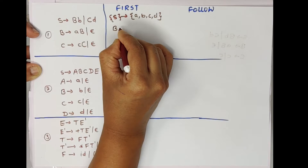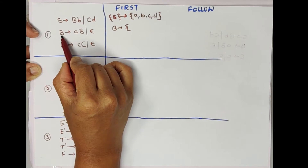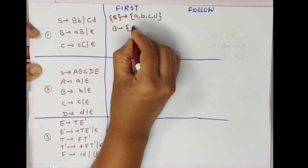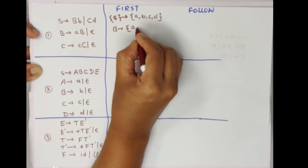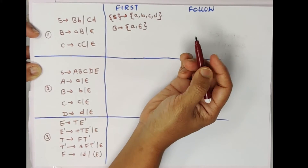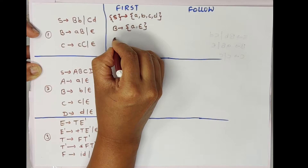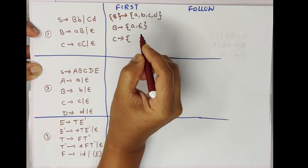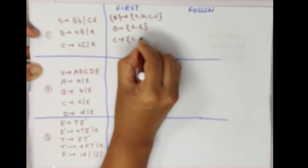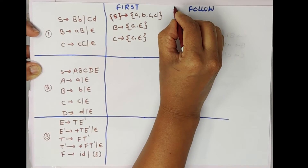Now we will find FIRST(B). B is giving small a and epsilon, so directly we get a and epsilon. So FIRST(B) = {a, ε}. Now we will find FIRST(C). C is giving c and epsilon. So FIRST(C) = {c, ε}.